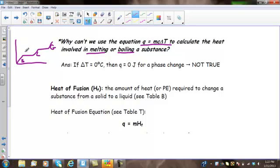So, here's my solid to liquid. There's my melting, and here's my vaporization, my liquid to gas. The reason that we can't use Q equals MC delta T, in order to calculate the energy involved in melting or boiling, is because we're at a plateau. There is no change in temperature at a plateau.